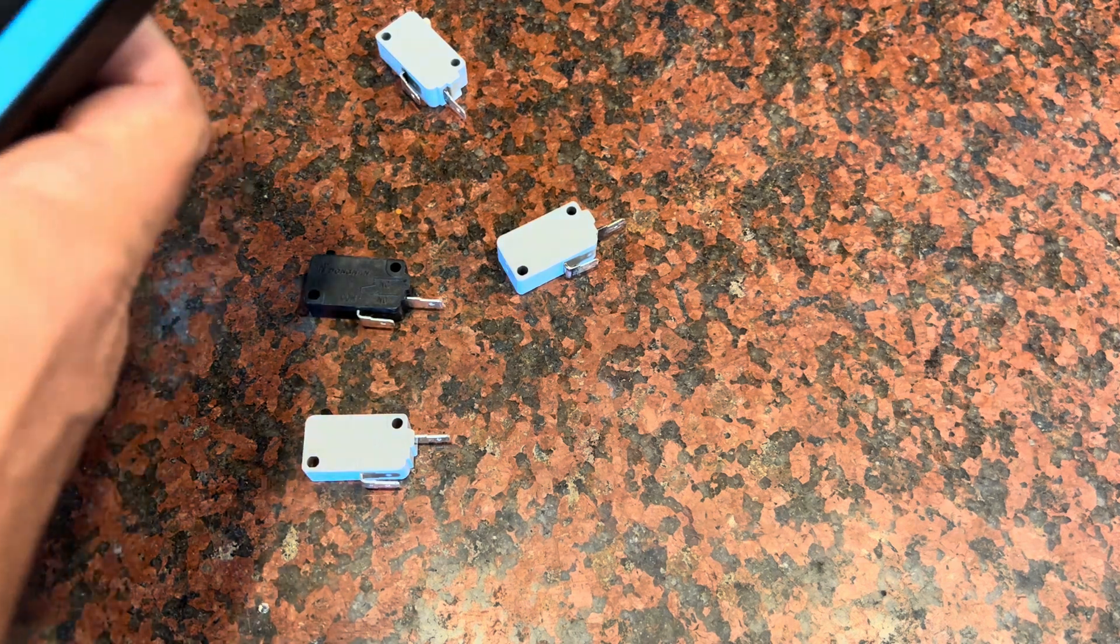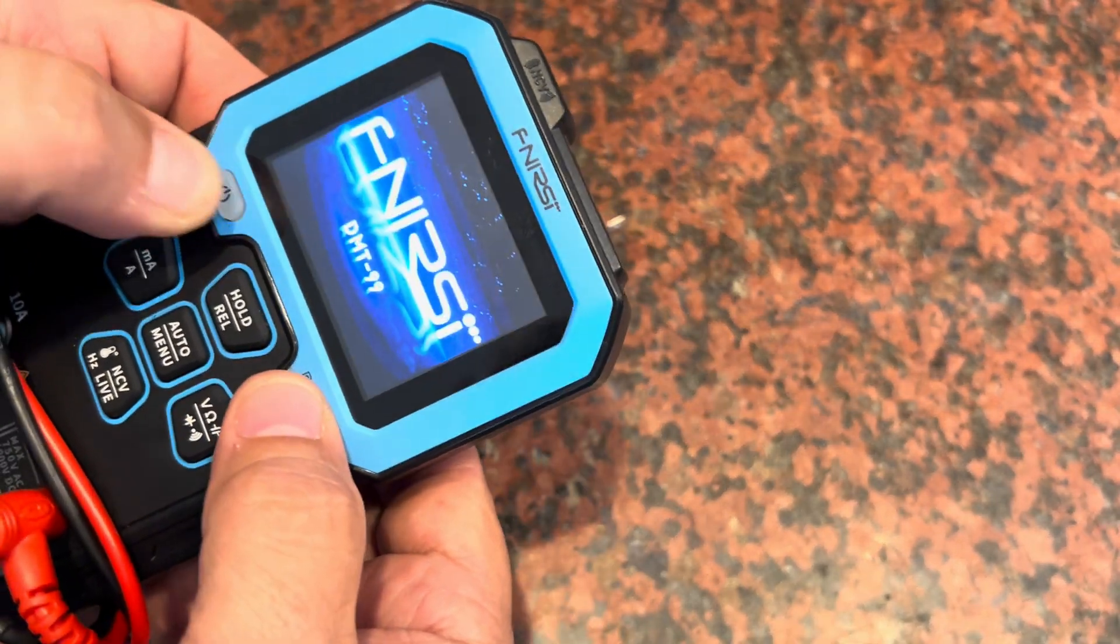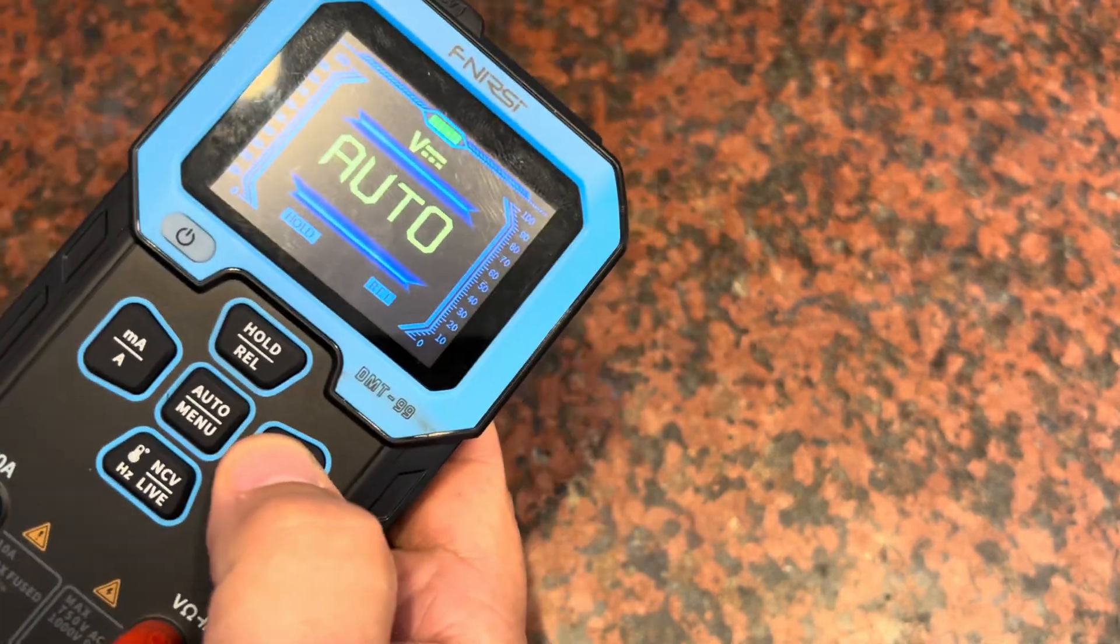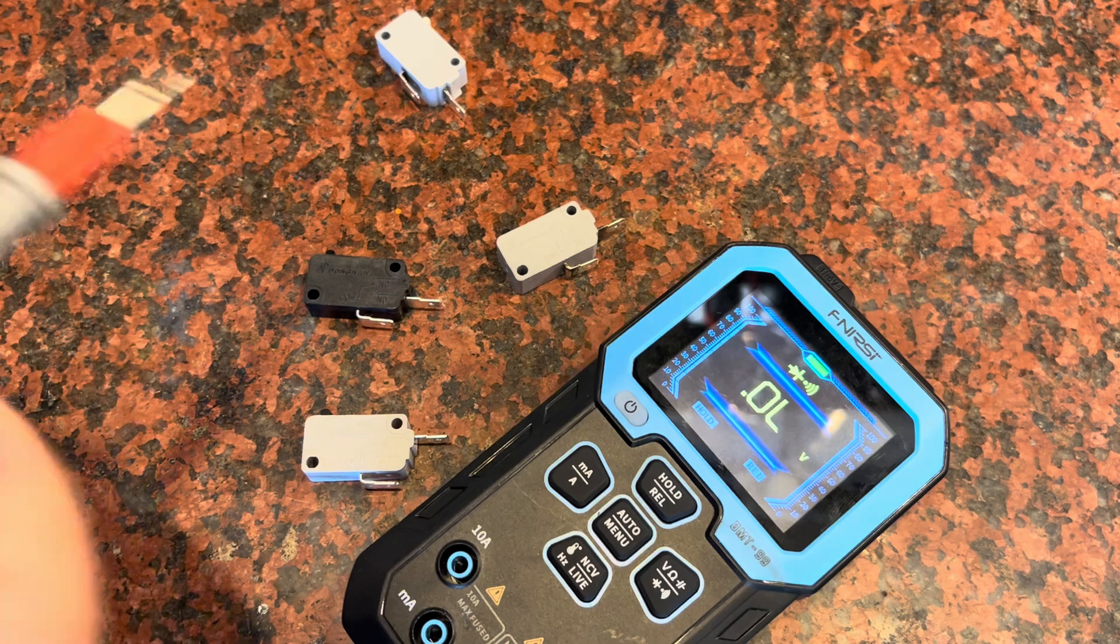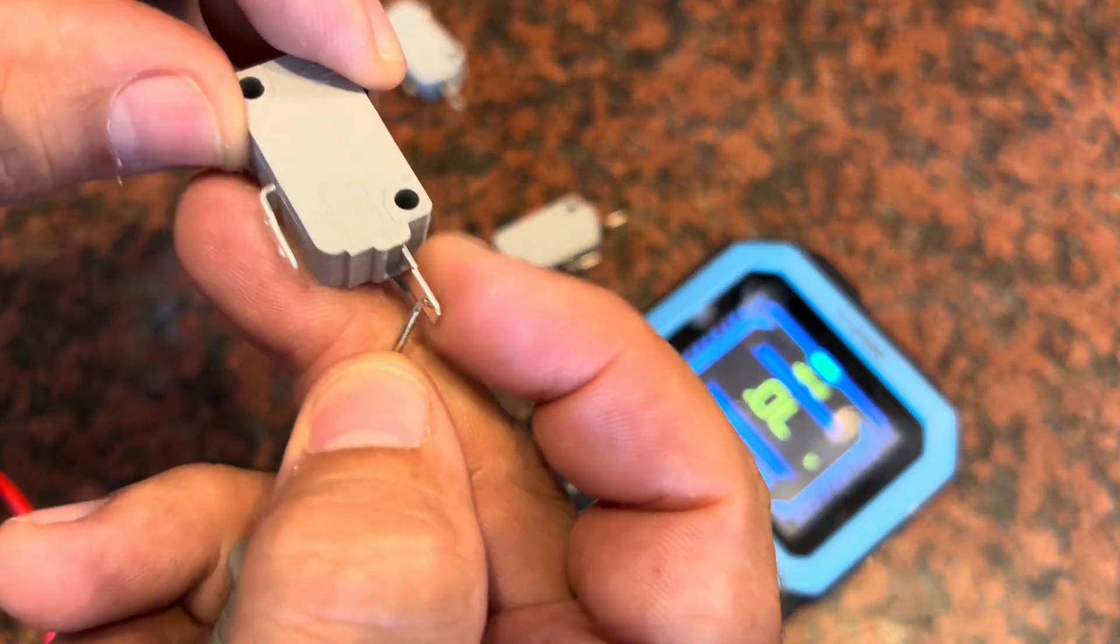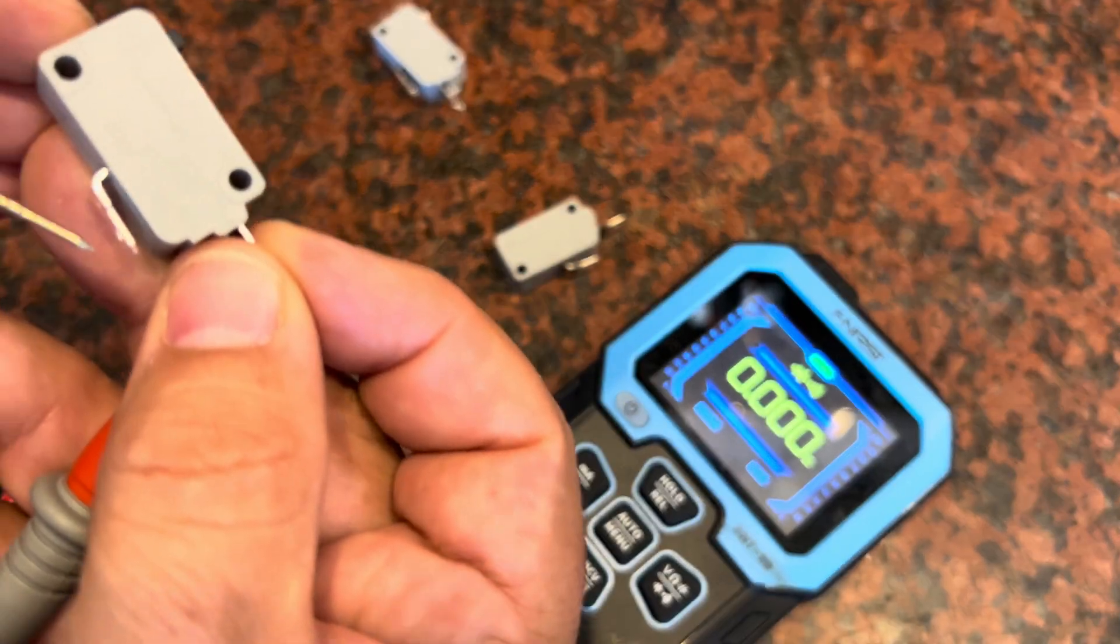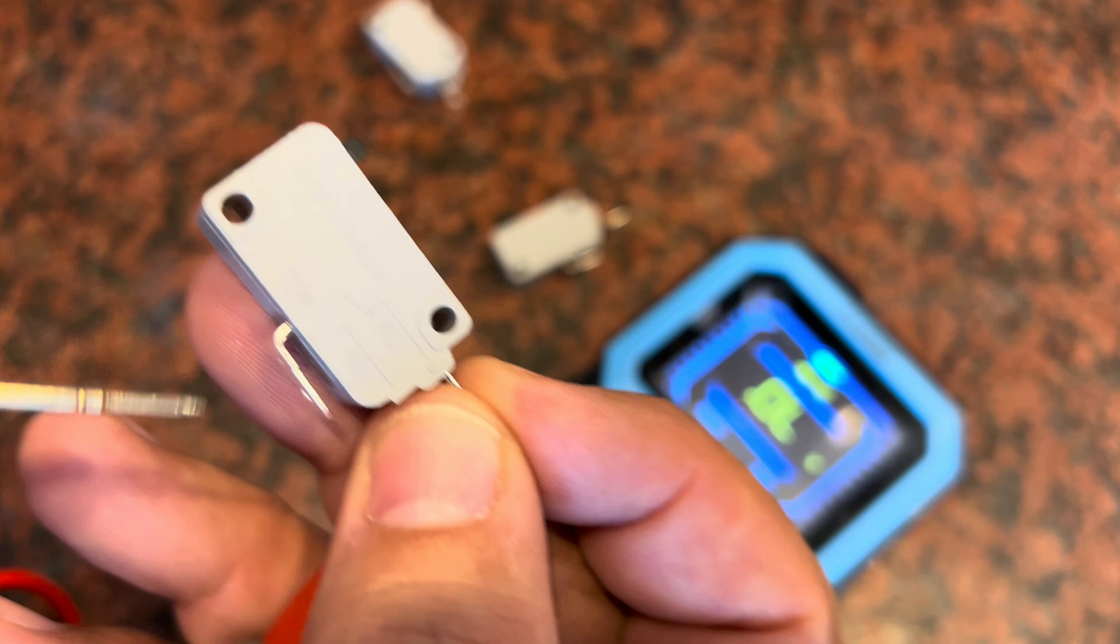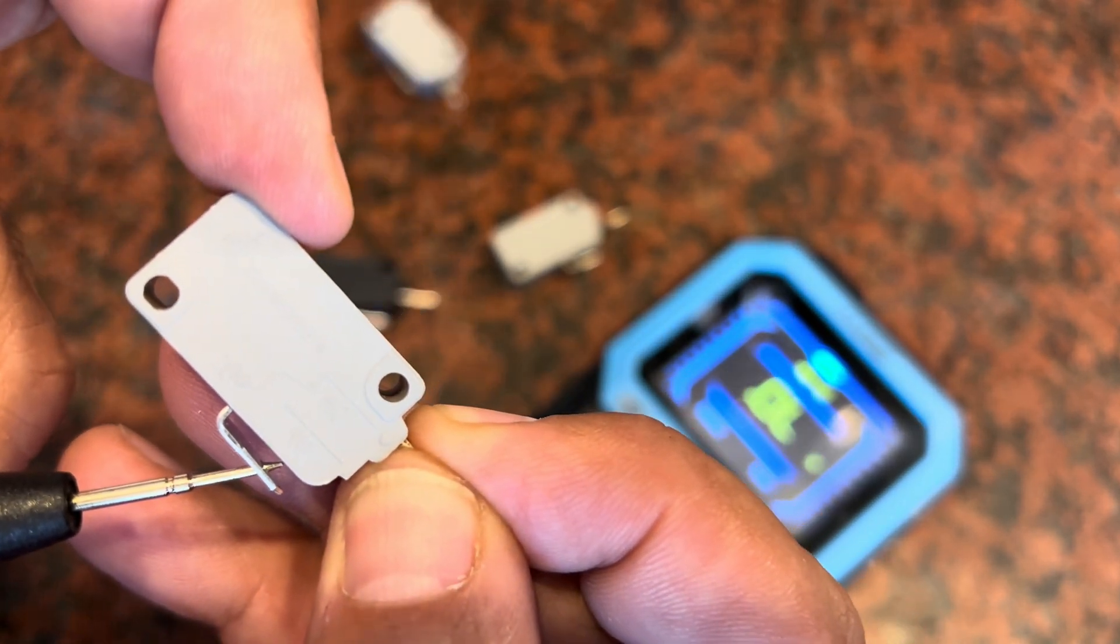You can see that on a multimeter like this. If I set it over here to the continuity, this switch here normally closed, as soon as I connect these two here it should have a connection and we get that beep. But now if I connect it through like this, push the button, I break the connection.